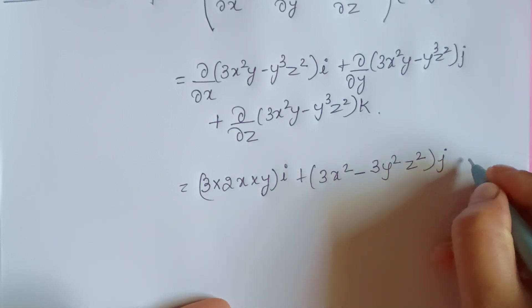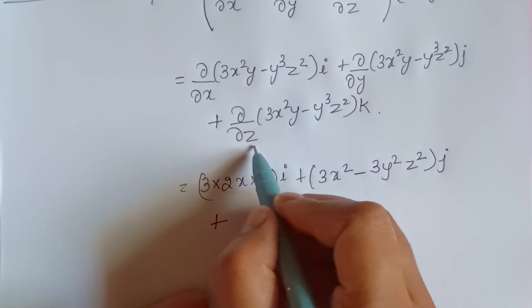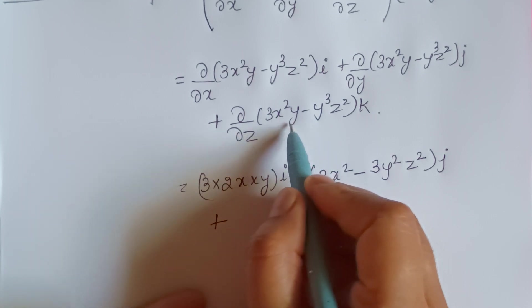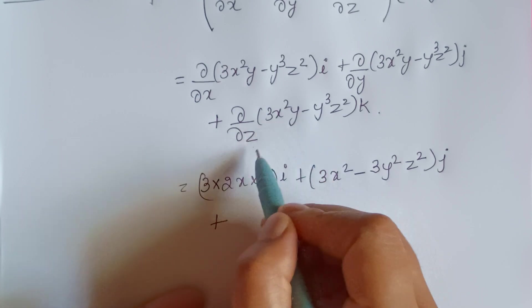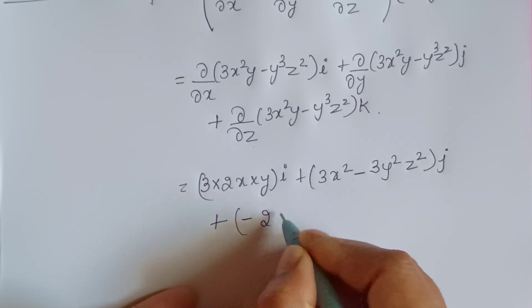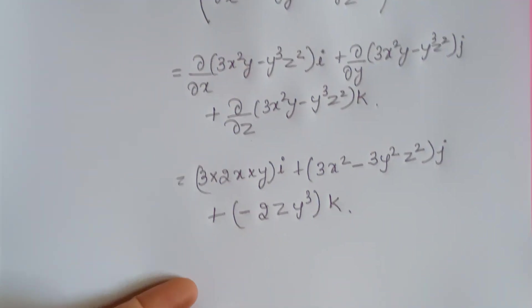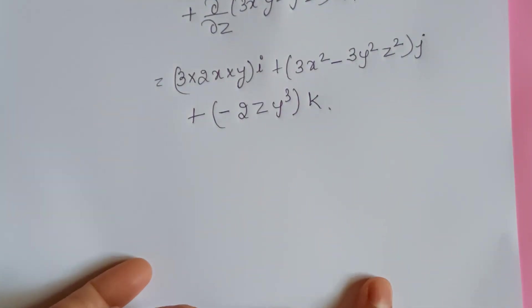Plus here with respect to z, this does not have anything to do with z, so I'm just going to ignore this because this is a constant. So this is 0 minus 2zy³ k.